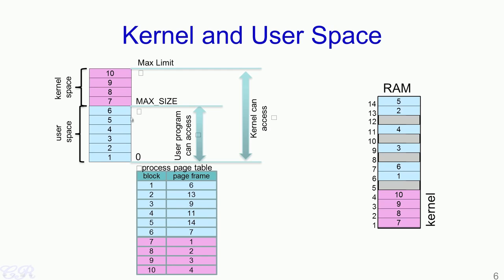We could divide this particular virtual address space into two components. One is the user space, which corresponds to the blue area containing the user process code, data and other segments such as the stack and heap. There is also the kernel space, which corresponds to the kernel code, data and other aspects of the kernel. The max size defines the boundary between the user space and the kernel space. A user program can only access code or data present in the user space and cannot access anything in the kernel space. The kernel, on the other hand, can access code as well as data in both the kernel space and the user space. This prevents user space programs from maliciously modifying kernel structures.